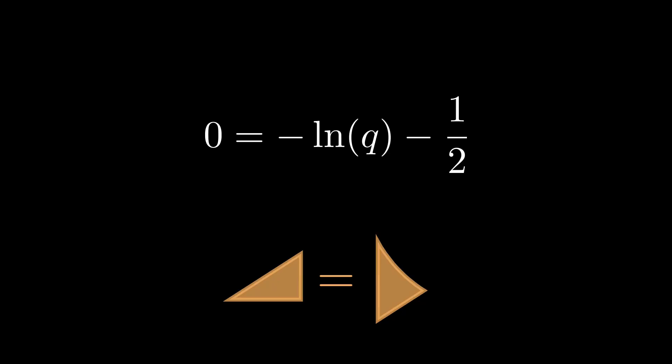And another algebra autopilot, adding natural log of q to the other side, raising both sides as a power of e, thus canceling out the natural log. Then knowing our exponent rules, we can finally arrive at the value q is equal to 1 over the square root of e.